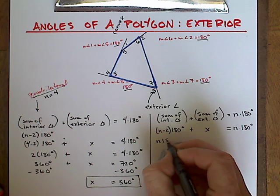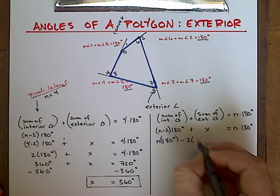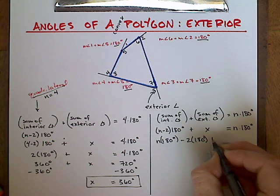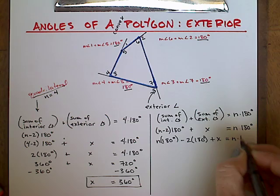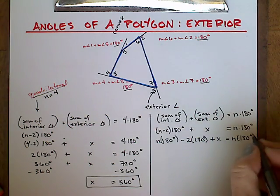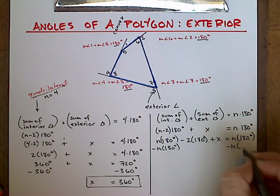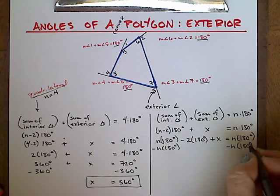So now we're going to go through these calculations. And notice that n times 180 is on both sides of the equation. So if we subtract this expression from both sides, it eliminates it. And we're left with negative two times 180 plus x equals zero.